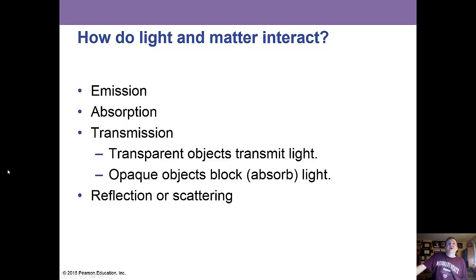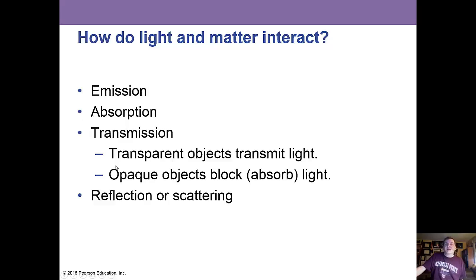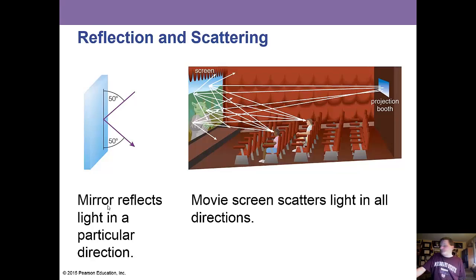Light and matter can interact through emission, absorption, and transmission — either through transparent objects emitting light, or opaque objects that block or absorb the light — and also reflecting or scattering. Movie screens scatter light in all directions, while a mirror reflects light in a particular direction.